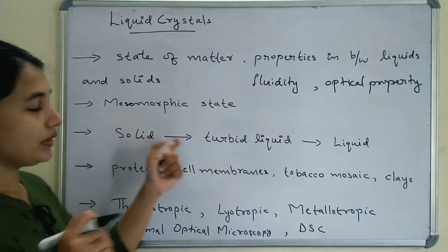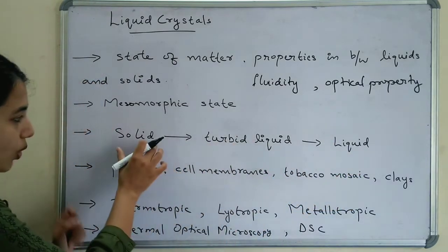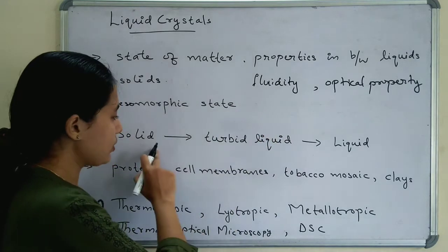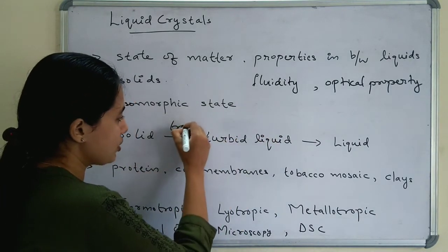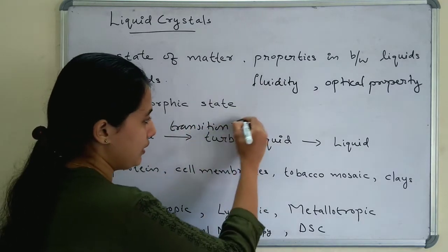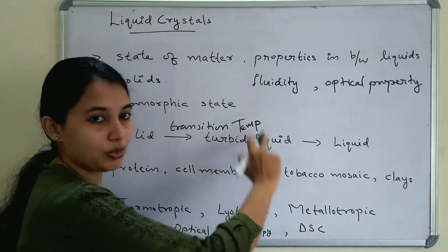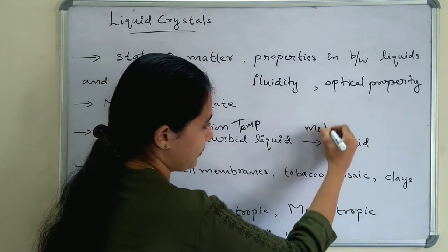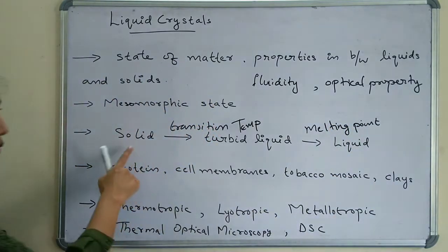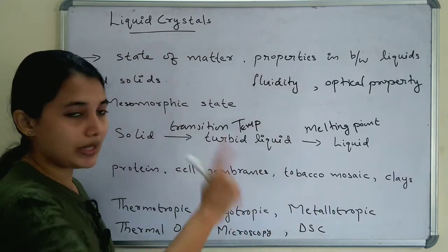Solid is transformed to turbid liquid, then converted to clear liquid. Turbid liquid is also called a liquid crystal. The temperature at which solid is converted to turbid liquid is the transition temperature, and the temperature at which turbid liquid is converted to clear liquid is the melting point.